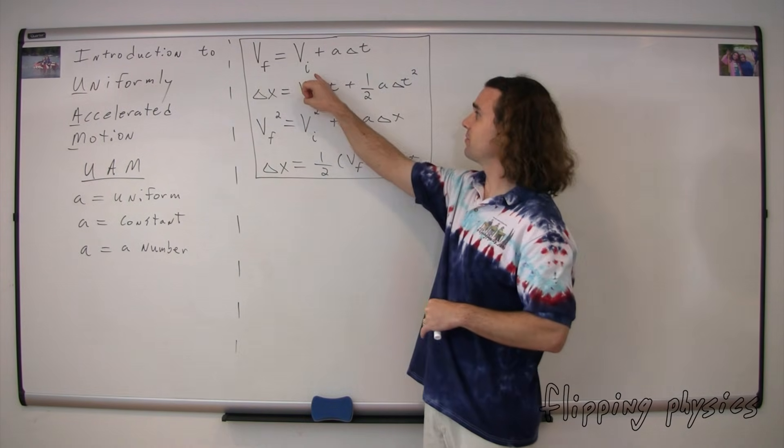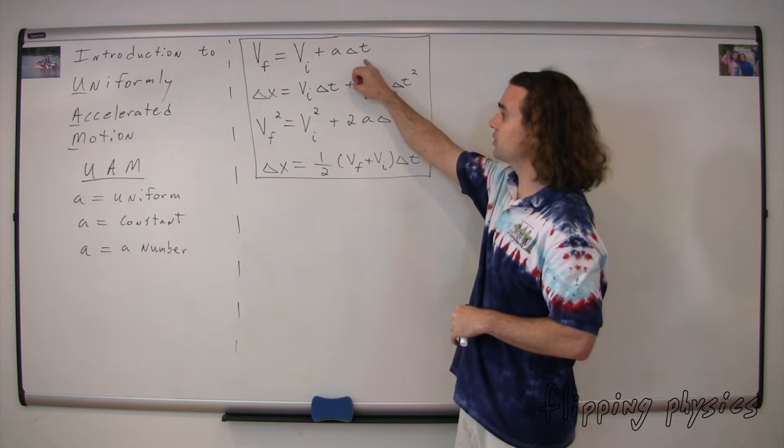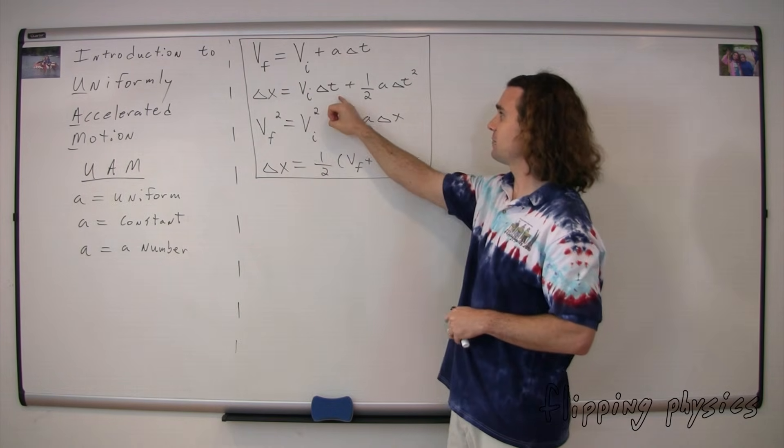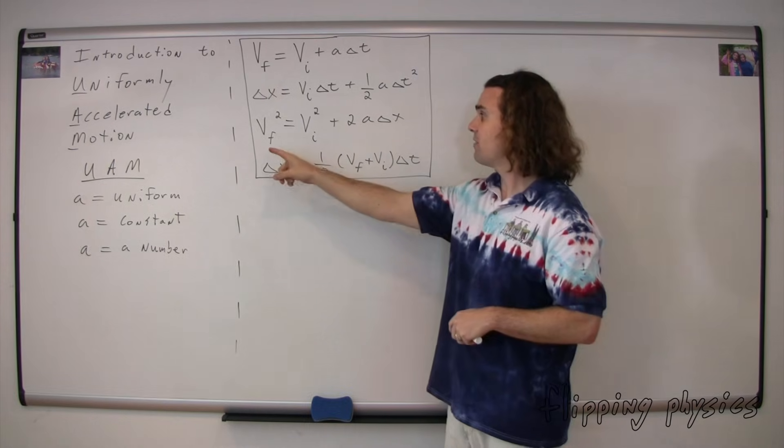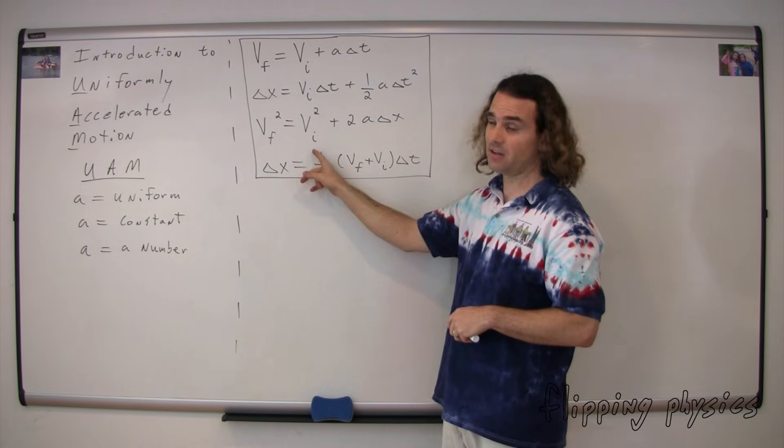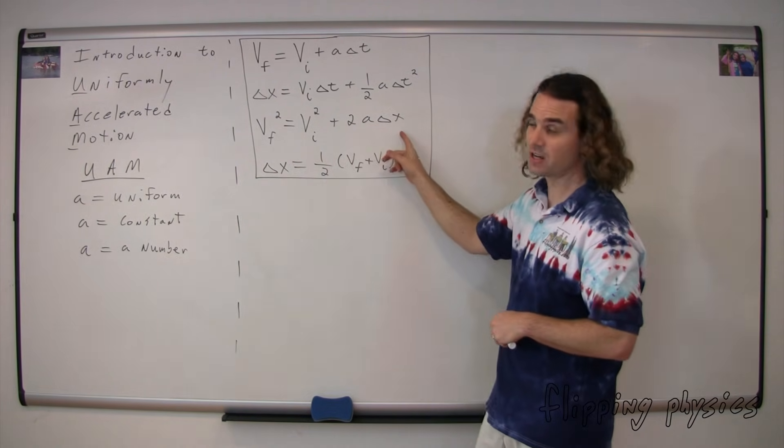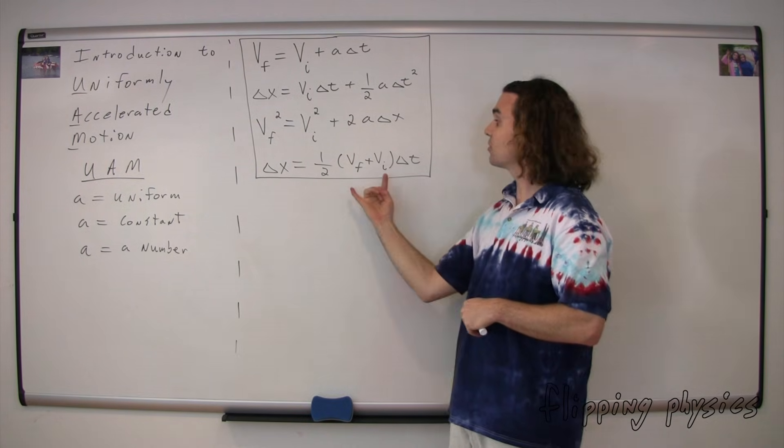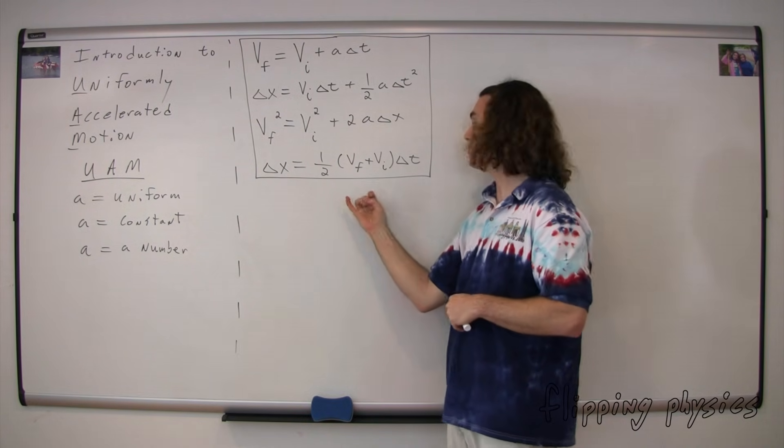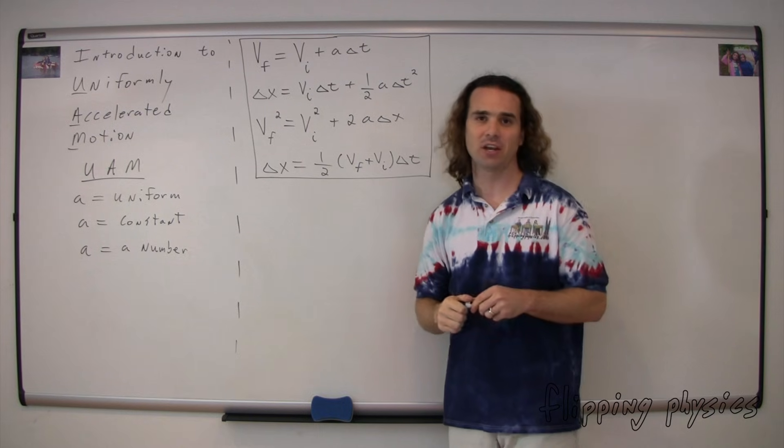Velocity final is equal to velocity initial plus the acceleration times the change in time. Displacement is equal to velocity initial times the change in time plus one-half times the acceleration times the change in time squared. Velocity final squared is equal to velocity initial squared plus 2 times the acceleration times the displacement. And the change in position is equal to one-half times the quantity velocity final plus velocity initial, that quantity multiplied by the change in time.